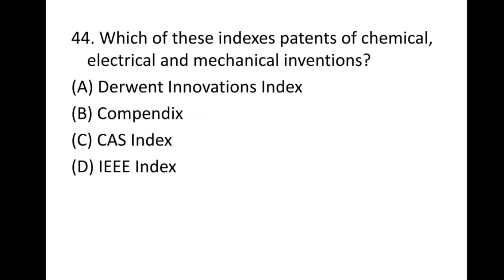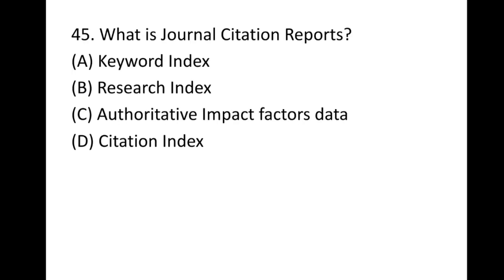Question 44: Which of these indexes patents of chemical, electrical, and mechanical inventions? Options: Derwent Innovations Index, Comp Index, CS Index, and I-Trilogy Index. Derwent Innovations Index is the right answer, option A. Question 45: What is the Journal Citation Reports? It provides authoritative impact factor data — the third option is the right answer.